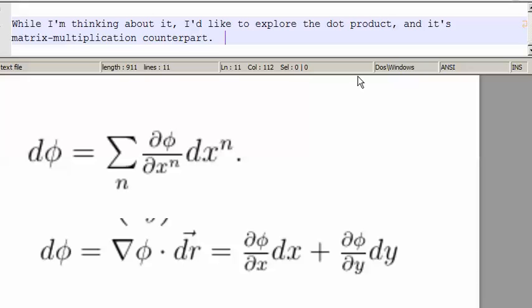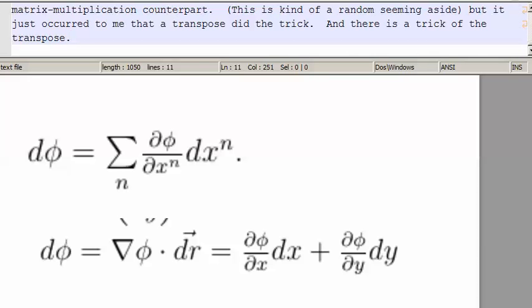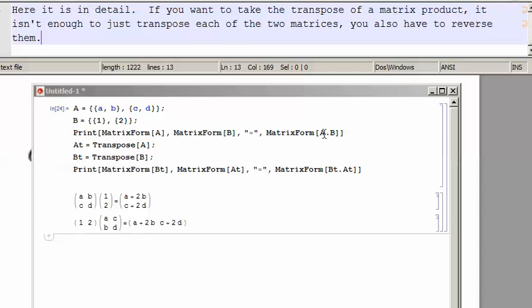While I'm thinking about it, I'd like to explore the dot product and its matrix multiplication counterpart. This is kind of a random seeming aside, but it just occurred to me that a transpose did the trick, and there is a trick of the transpose.